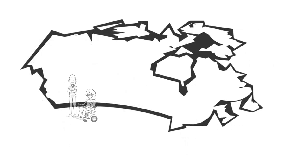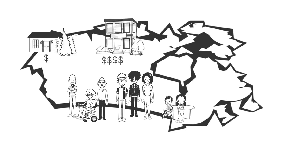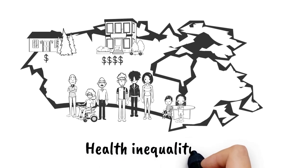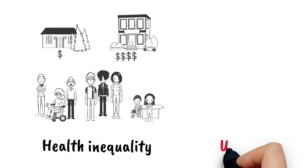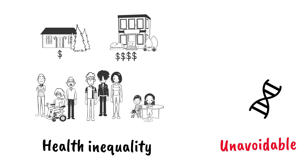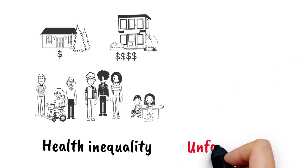A difference in health across population groups, such as the low-income and high-income neighborhoods, is called a health inequality. Sometimes, health inequalities are unavoidable. For instance, when a health difference can be attributed to a biological factor, like your DNA. Other times, health inequalities are unfair and avoidable. This type of inequality is considered an inequity, like differences by income level.